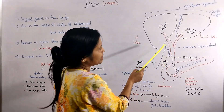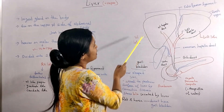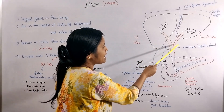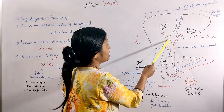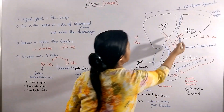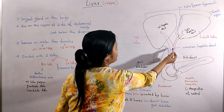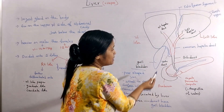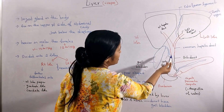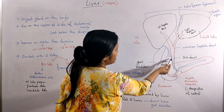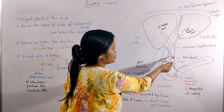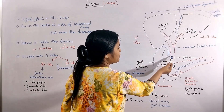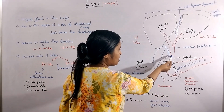From the right lobe comes the right hepatic duct, and from the left lobe comes the left hepatic duct. These two together form the common hepatic duct. The common hepatic duct joins with the cystic duct — which is the duct of the gallbladder.